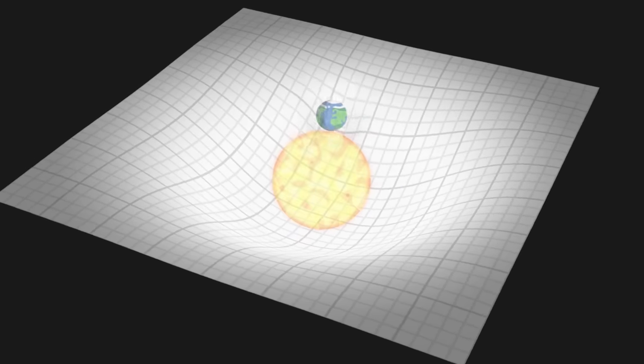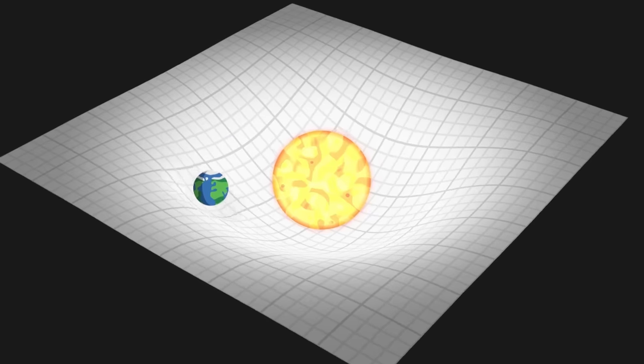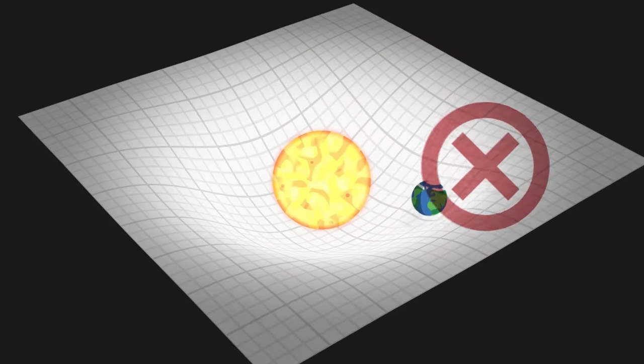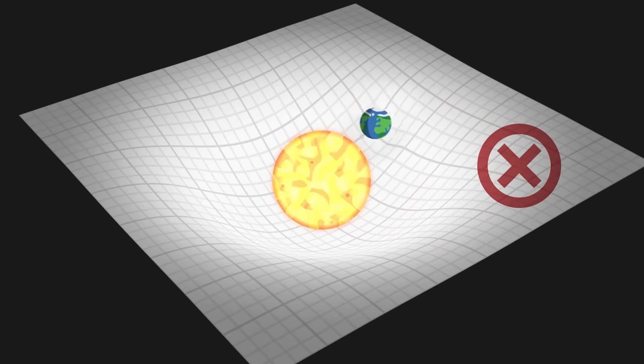However, although it is extremely widespread, this way of presenting general relativity has a large number of problems, which make it not very rigorous. In this video, we will try to improve this image by making four major changes.